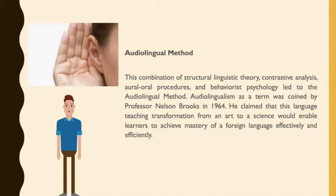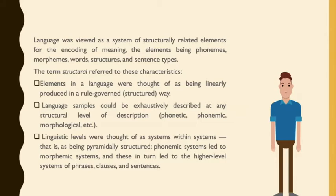Language was viewed as a system of structurally related elements for the encoding of meaning, the elements being phonemes, morphemes, words, structures, and sentence types. The term 'structural' referred to these characteristics. Elements in a language were thought of as being linearly produced in a rule-governed, structured way.